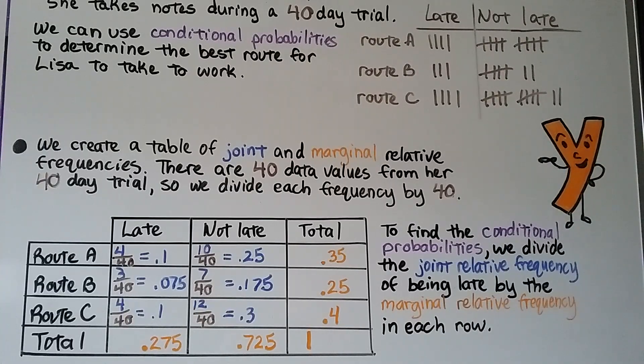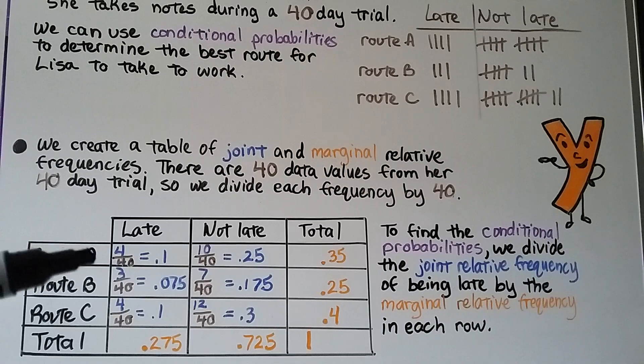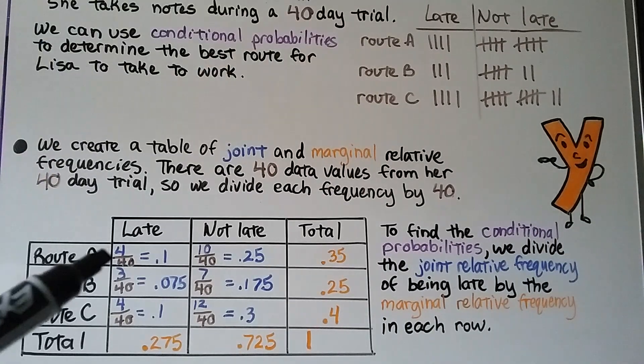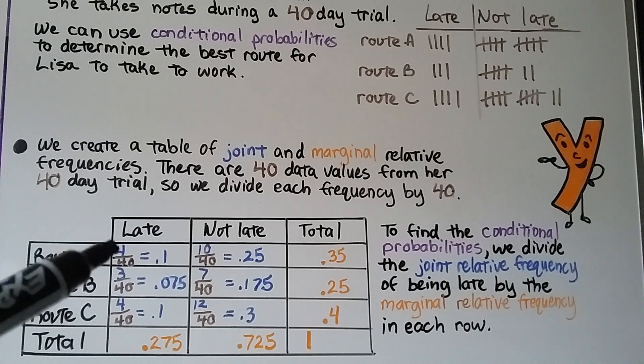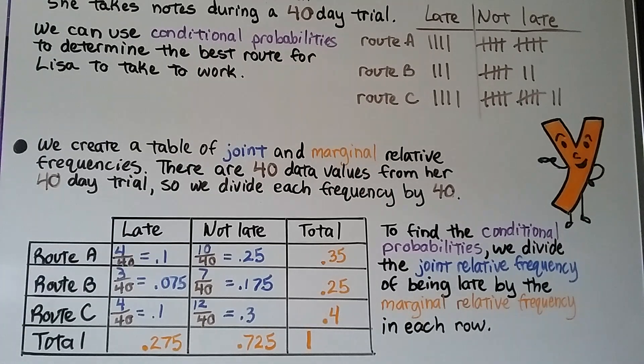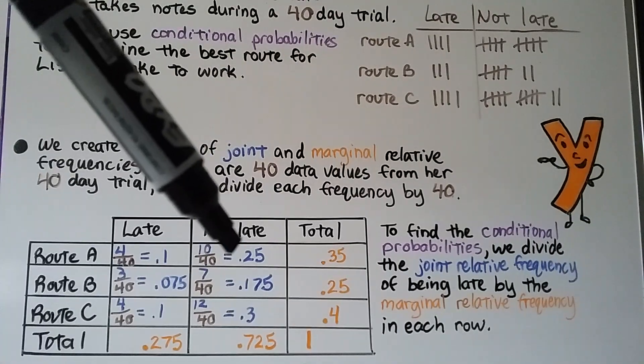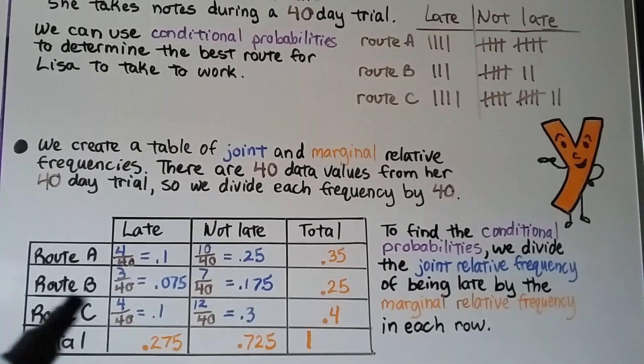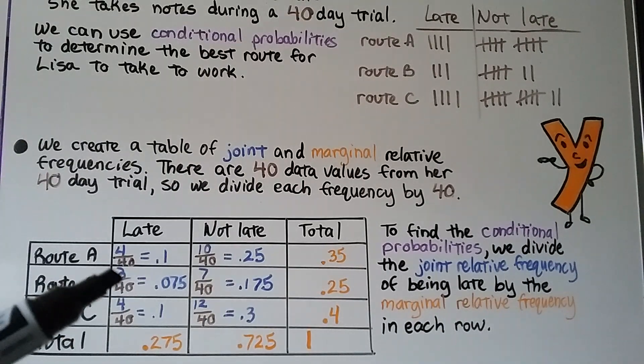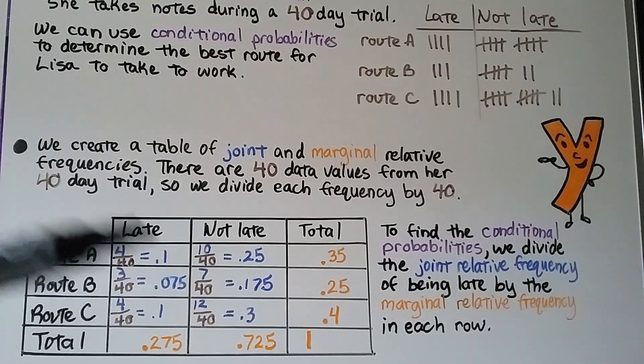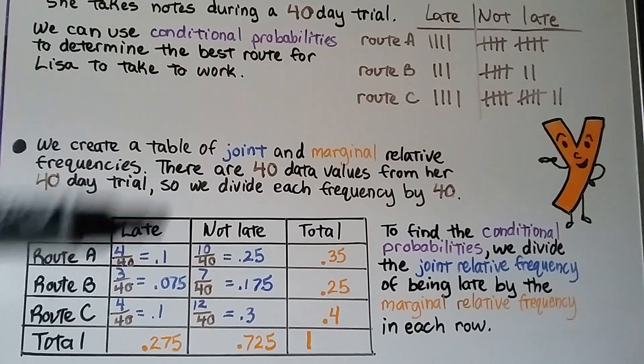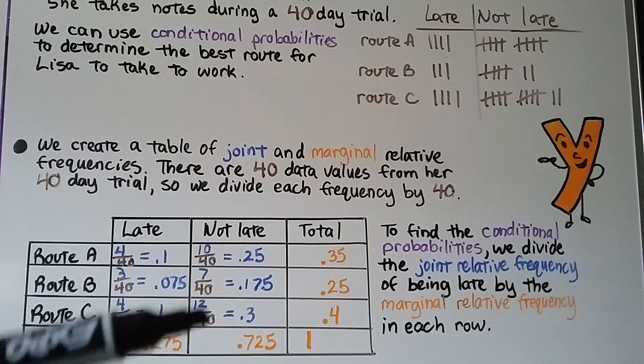Now we create a table of joint and marginal relative frequencies, and there's 40 data values because she did a 40-day trial. So we divide each frequency by 40. For route A, she was late four times, and we put it over the 40. Four-fortieths is equal to 0.1. For not late, we have a ten, so that's going to be ten over forty. That's one-fourth, or 0.25. For route B, we have three over forty for late and seven over forty for not late. For route C, we have four over forty for late and twelve-fortieths for not late.